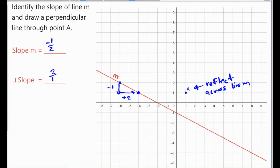If we flip this one half we get 2 over 1, and the opposite of a negative is a positive, so we want to use a slope of 2 over 1 to find a reflection point. Let's start at point A and go up 2 and 1 to the right—that is the perpendicular slope—but we notice that we're moving away from our line m.